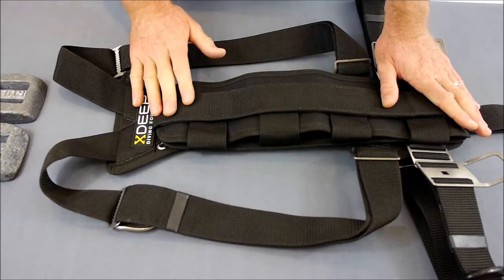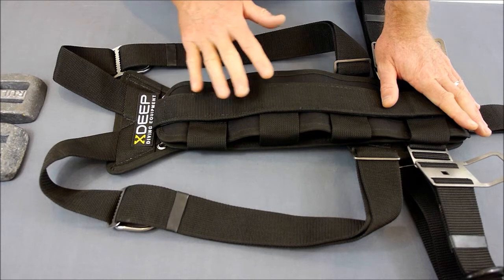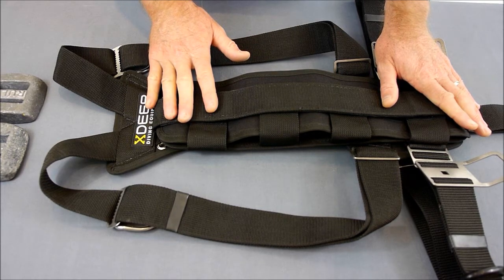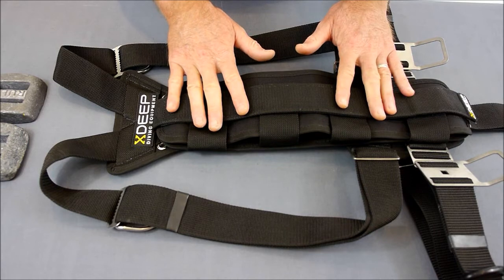The four compartments within the central weight pocket not only stop the lead from moving, but they also help you to position the weight either high or low to improve your trim.